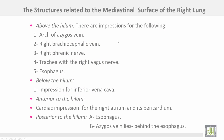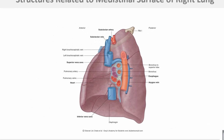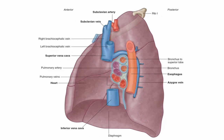The structures related to the mediastinal surface of the right lung: above the hilum, there are impressions for the arch of the azygos vein, right brachiocephalic vein, right phrenic nerve, trachea with the right vagus nerve, and esophagus. Below the hilum, there is an impression for the inferior vena cava over a small area. Anterior to the hilum, there is a cardiac impression for the right atrium and its pericardium. Posterior to the hilum, there is the esophagus, and the azygos vein lies behind the esophagus. This figure shows the structures related to the mediastinal surface of the right lung.